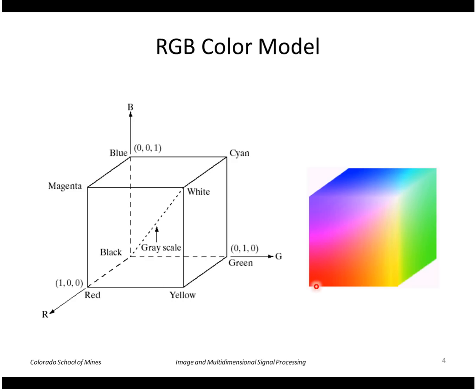So this would be pure red here, pure blue, and pure green over here. And of course the point (1, 1, 1) is white.